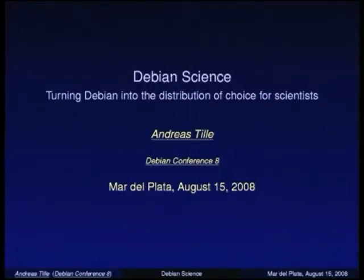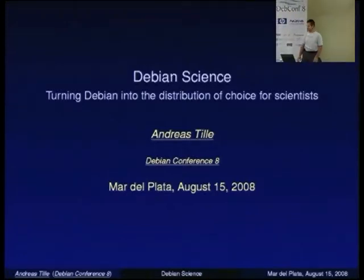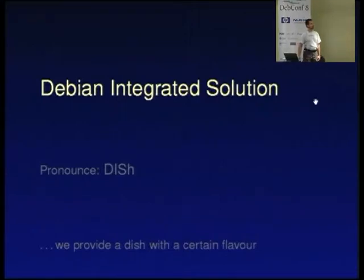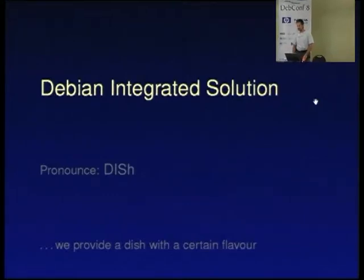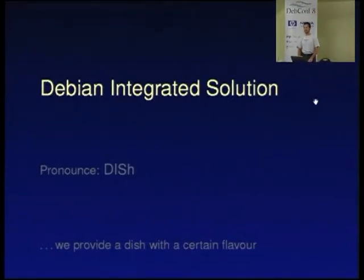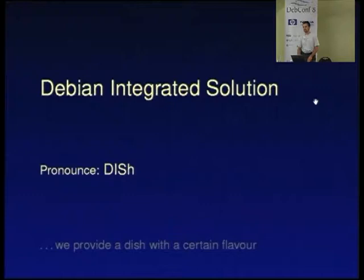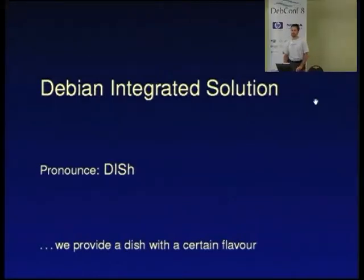Now to the talk. I got one question in advance: is Debian the distribution of choice for scientists? The answer was no. I want to describe the process of turning Debian into the distribution of choice for scientists. I'd like to try a new term — the Debian Integrated Solution — and I would like to pronounce it 'dish' because we provide a dish with a certain flavor to you, and that flavor in this case is science.